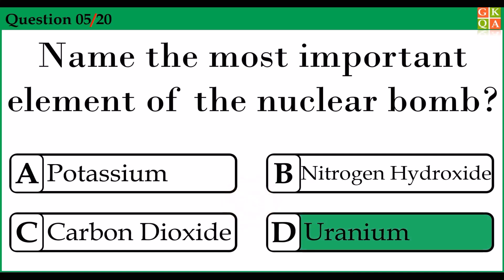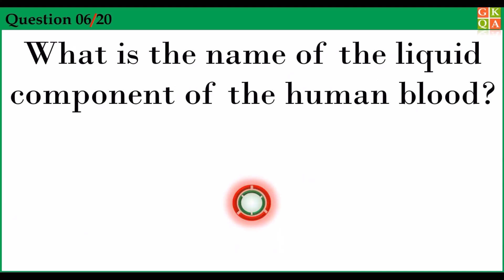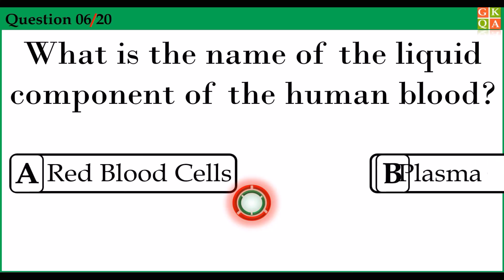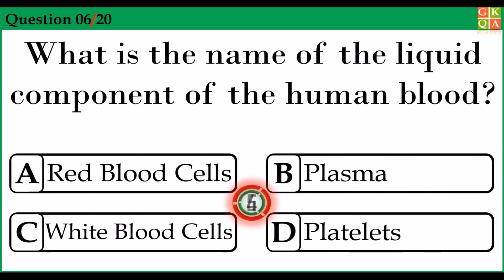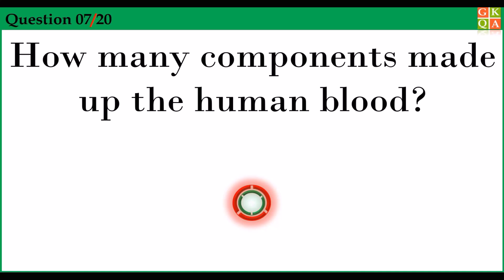Answer option D: Uranium. What is the name of the liquid component of the human blood? Answer option B: Plasma. How many components make up the human blood?